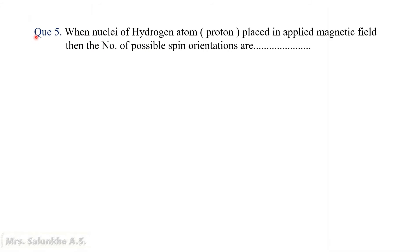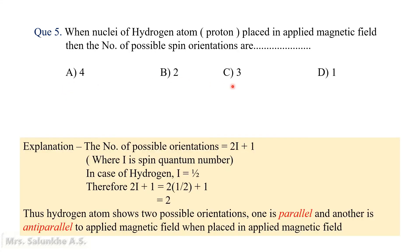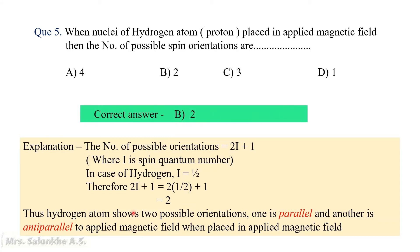Question 5: When the nucleus of a hydrogen atom, i.e., a proton, is placed in an applied magnetic field, then the number of possible spin orientations are: 4, 2, 3, or 1? When a magnetic nucleus is placed in an applied magnetic field, the number of possible orientations is given by 2I+1, where I is the spin quantum number. For hydrogen, I = 1/2, so 2I+1 = 2. Thus, hydrogen shows two orientations: parallel and anti-parallel. The correct answer is 2.